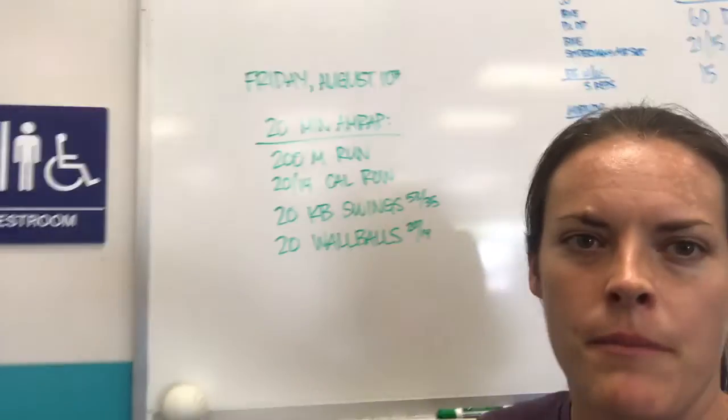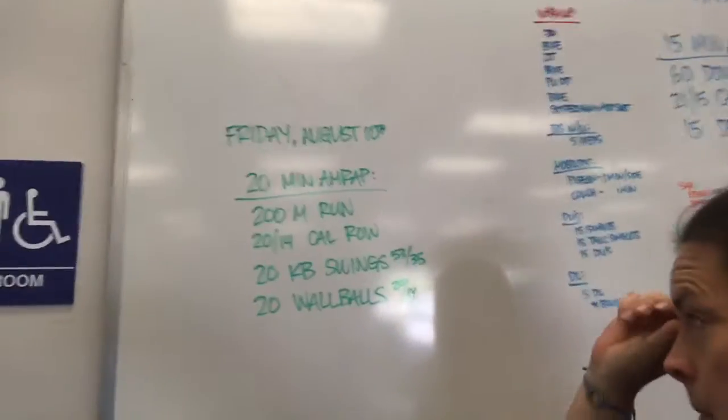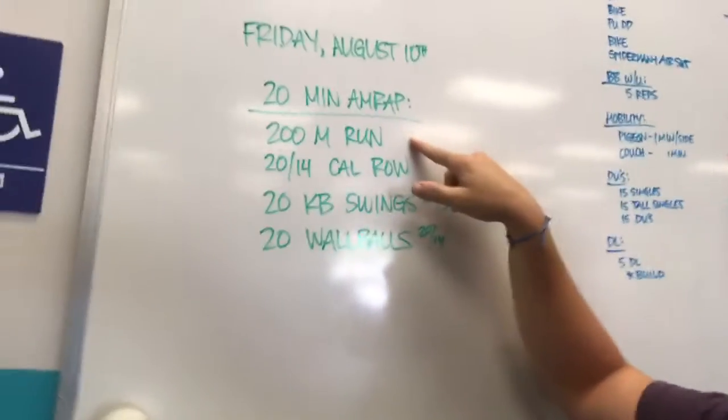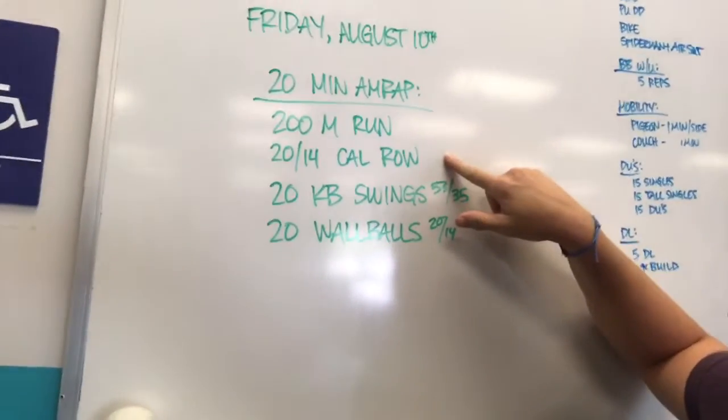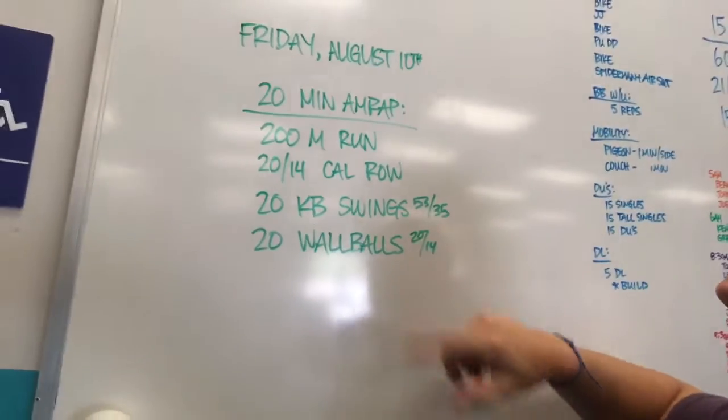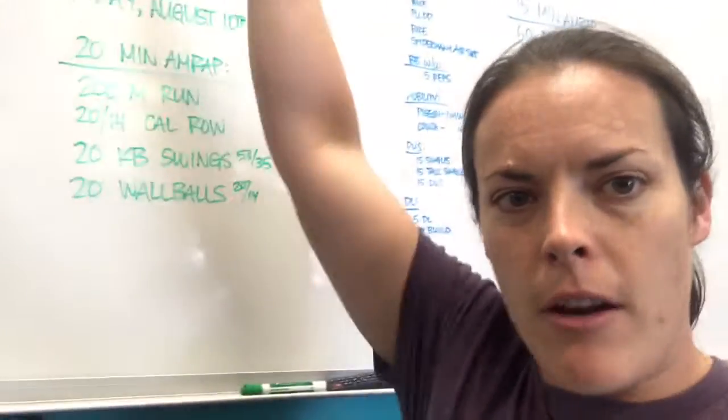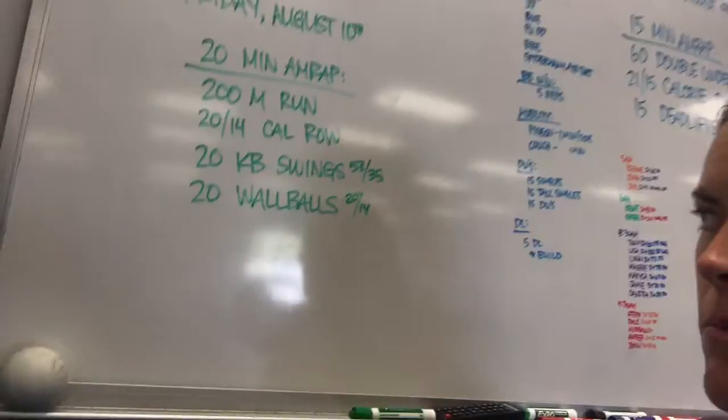We're doing a 20-minute AMRAP tomorrow. Some cardio and then some weightlifting mixed in. We'll go 200-meter run, 20 calories on the row for the guys, 14 for the girls, 20 kettlebell swings - those will be all the way overhead for the kettlebell swing - and then 20 wall balls.